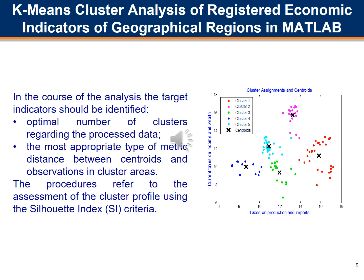The cluster analysis was performed in connection with defined groups of indicators on economic revenues, expenditures, and excessive deficit procedure for 10 countries using the K-means method. The target indicators included identifying the optimal number of clusters, the most appropriate type of metric distance between centroids and observations, and assessment of the cluster profile using the Silhouette Index (SI) criteria.